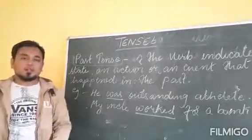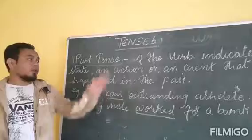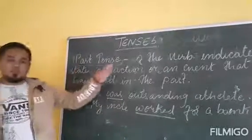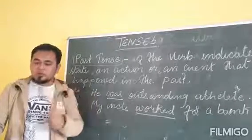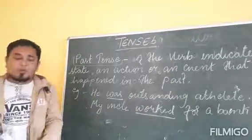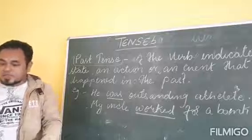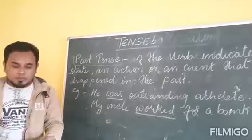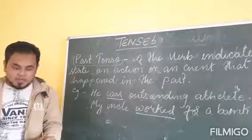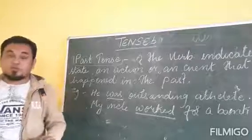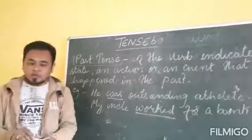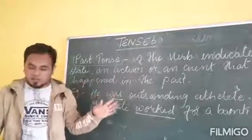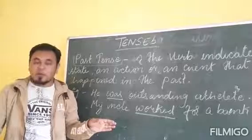Welcome students, this is the third part of my video on the topic of tenses. Today we will be dealing with past tense. In the previous video, I taught you about the present tense and its four aspects: simple present tense, present continuous tense, present perfect tense, and present perfect continuous tense. Today we will be dealing with past tense and its four aspects — simple, continuous, perfect, and perfect continuous.